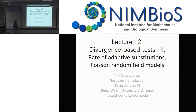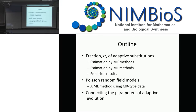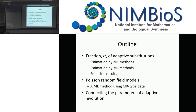Let's finish up divergence-based methods. The outline covers the fraction alpha of adaptive substitutions, which we can estimate using McDonald-Kreitman type approaches and maximum likelihood. I'll go over empirical results, then discuss Poisson random fields using McDonald-Kreitman data — polymorphism, divergence, replacement, and silent data — using maximum likelihood. I'll conclude by connecting all these parameters, including omega (the ratio of synonymous versus non-synonymous substitutions) and alpha, since these different methods estimate slightly different things.